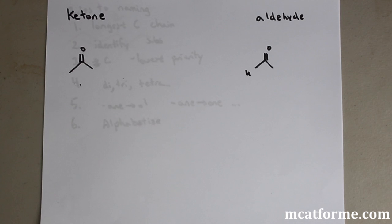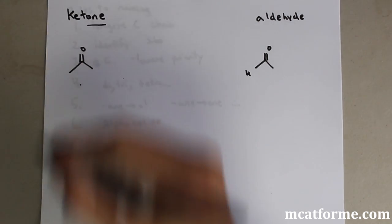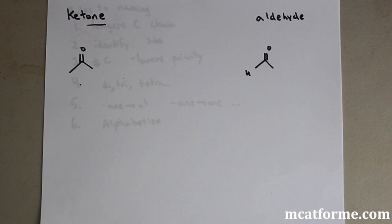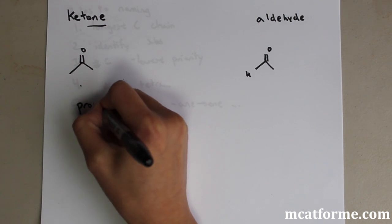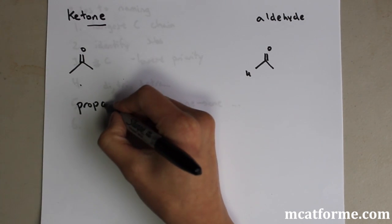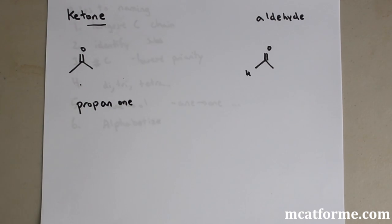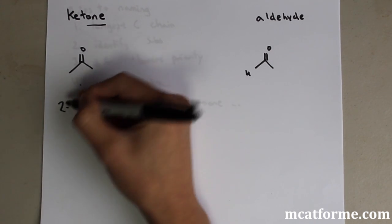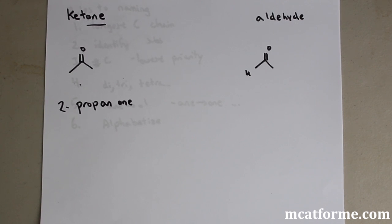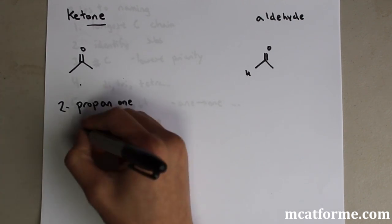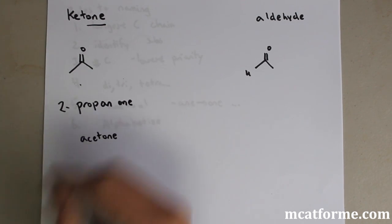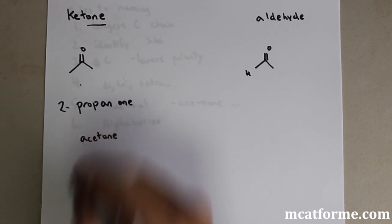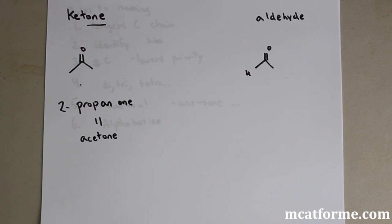Next is ketones, also known as carbonyls — they have a double-bonded oxygen. Ketones have the ending '-one'. With three carbons the prefix is 'prop', giving us propan-, then '-one'. We also number where it comes from — carbon two. So 2-propanone. This one is important: the common name for 2-propanone is acetone. They are equal to each other; one is just the common name.